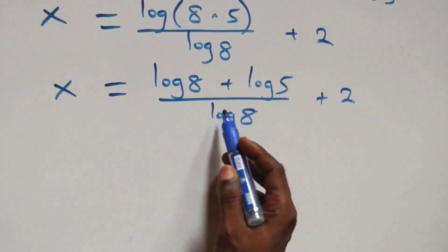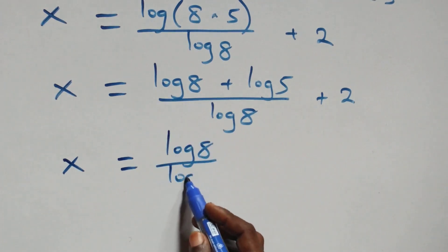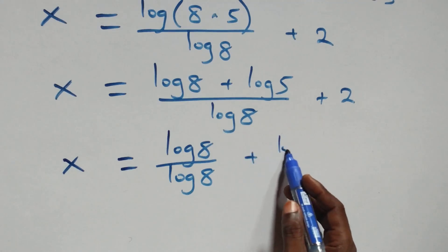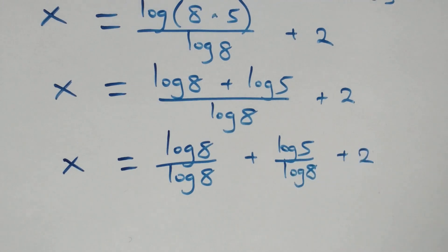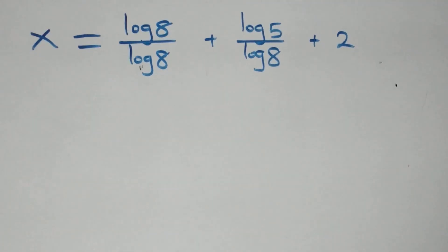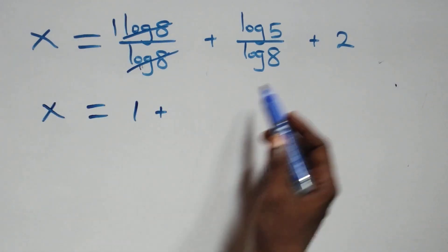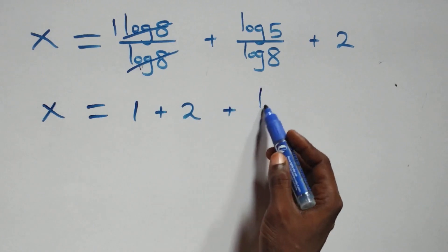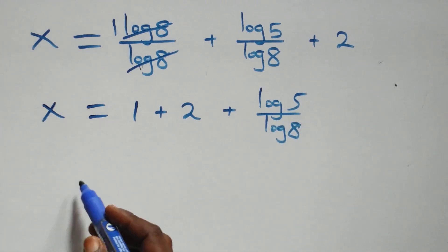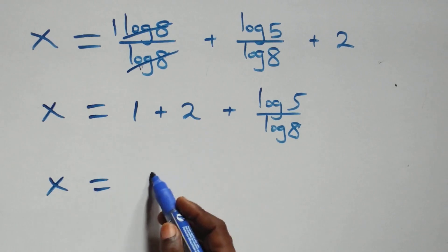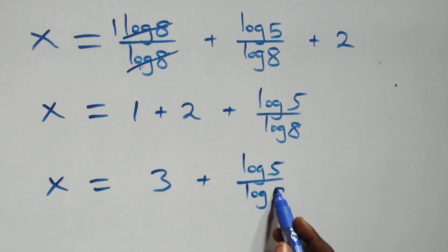We separate into two fractions: x equals log 8 over log 8 plus log 5 over log 8, all plus 2. The log 8 terms cancel to give 1, so x equals 1 plus log 5 over log 8 plus 2, which gives x equals 3 plus log 5 over log 8.